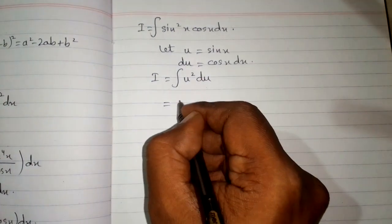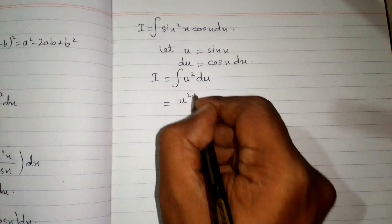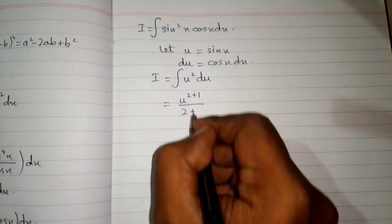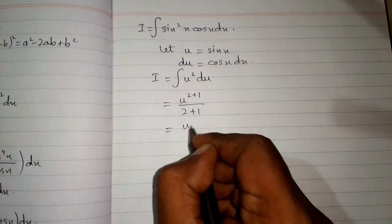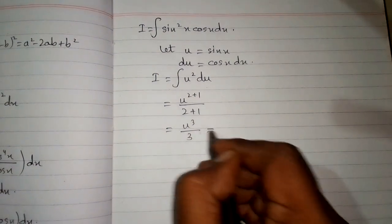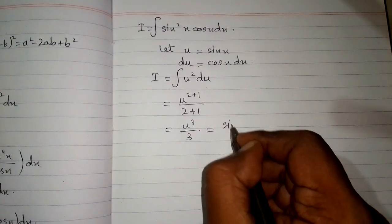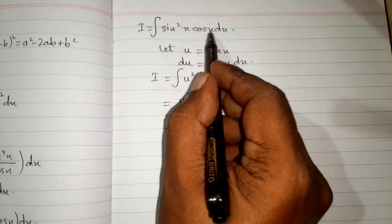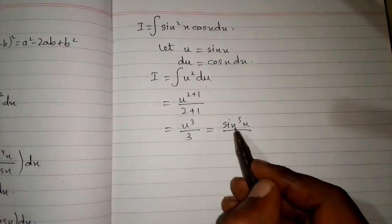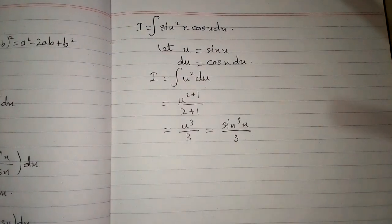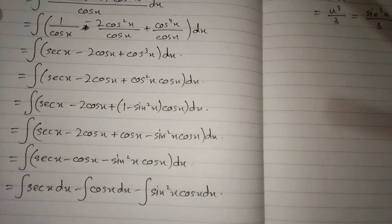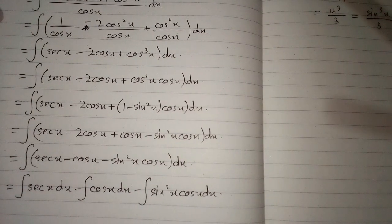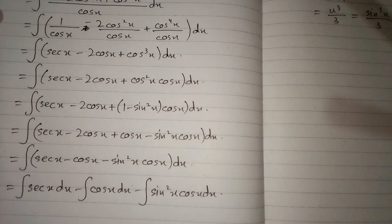Applying the power rule of integration, we get u raised to the power 2 plus 1 upon 2 plus 1, which gives u cube upon 3. Substituting back, the integral of sin square x cos x dx equals sin cube x upon 3. So the full expression is: integral of sec x, minus integral of cos x, minus integral of sin square x cos x dx.